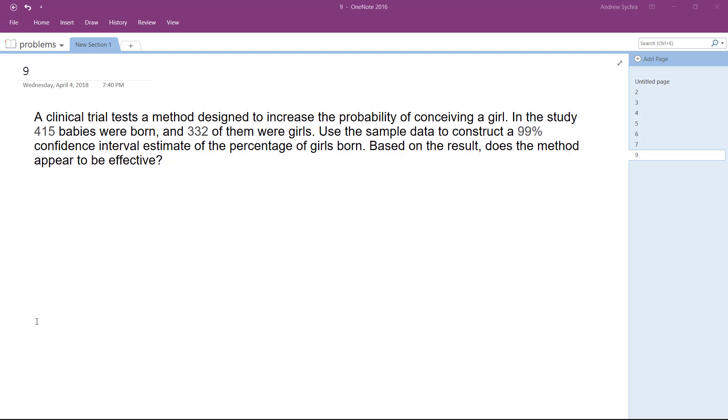Alright, we have a clinical trial test with a method designed to increase the probability of conceiving a girl. In this study, 415 babies were born and 332 of them were girls. We want to use the sample data to construct a 99% confidence interval and estimate the percentage of girls born. Based on the result, does the method appear to be effective?